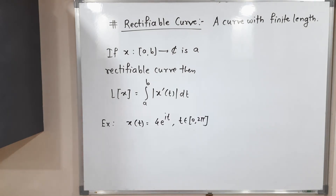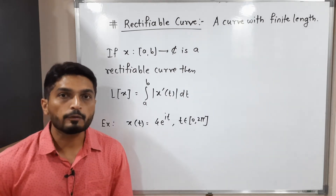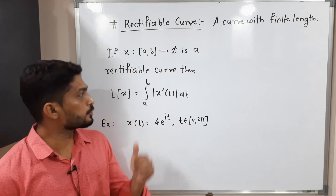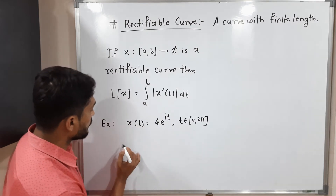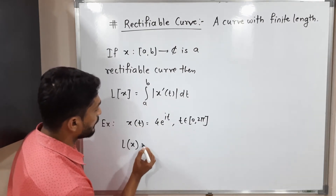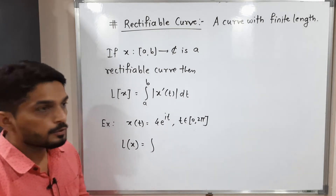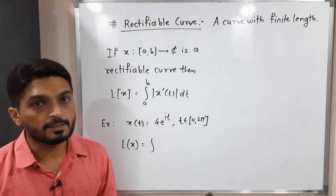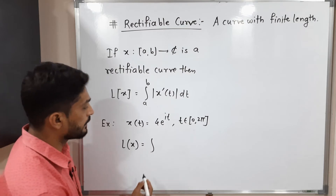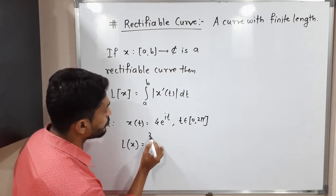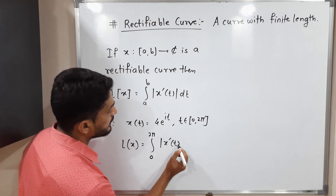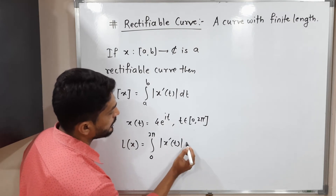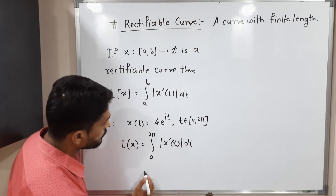Let us discuss one example so you can easily understand this concept. Consider the curve x(t) defined on the closed interval [0, 2π]. We have to find its length. Let us use the formula: L(x) = ∫ from 0 to 2π of |x'(t)| dt.